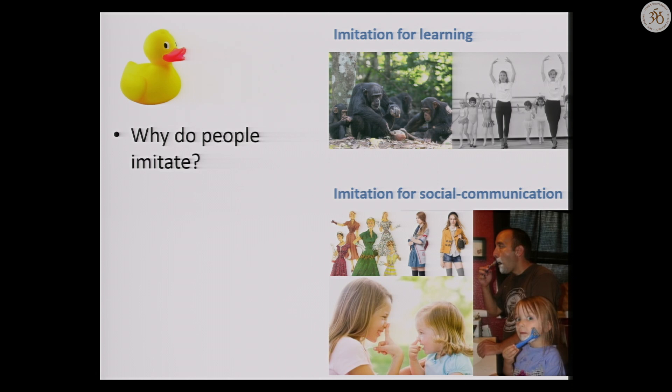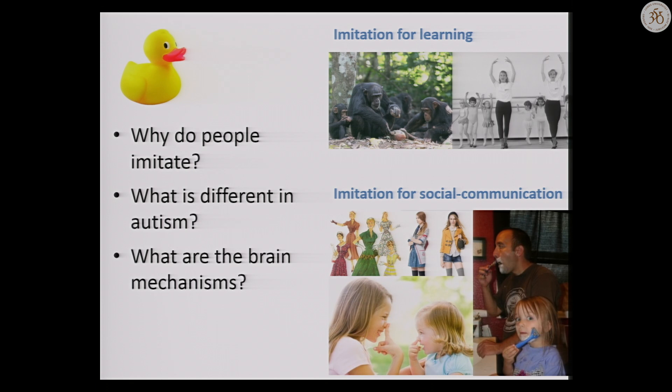When the little girl sees her big sister touch her nose and she touches her nose, she's not learning anything — she already knows where her nose is. But she wants to communicate with her sister, play a game, and show 'I'm like you, I enjoy interacting with you.' So we're going to look at studies about why people imitate, what's different about imitation behavior in autism, and what we can say about the brain mechanisms that drive this kind of imitation and allow us to imitate.